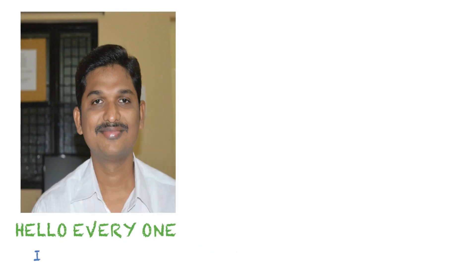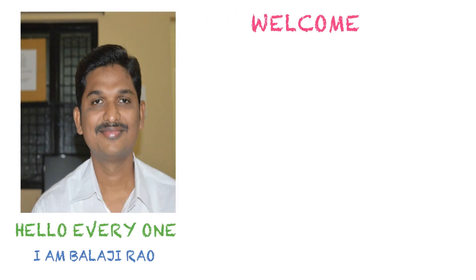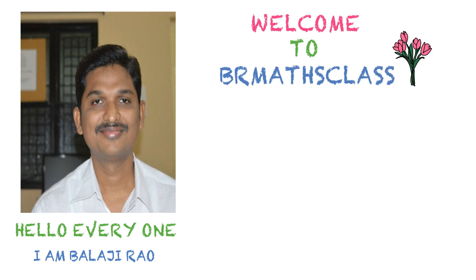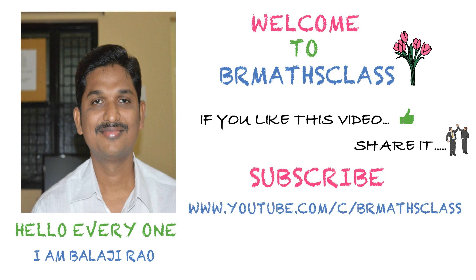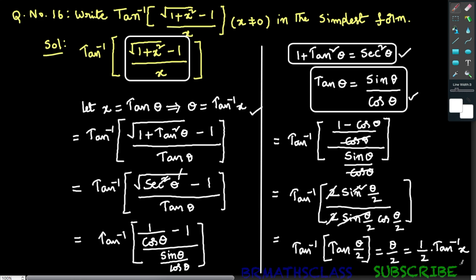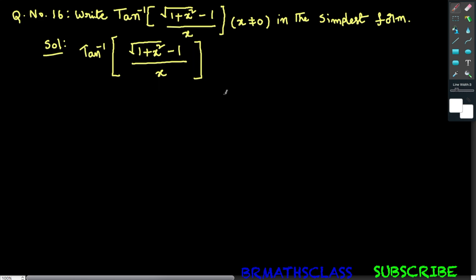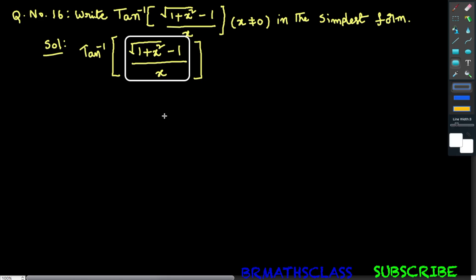Hello everyone, I am Balaji Rao, welcome to BR Max Class. If you like this video, share it with your friends and subscribe to my YouTube channel to get more updates. Write tan inverse of square root of 1 plus x squared minus 1, divided by x, in the simplest form. To write this expression into simplest form, observe the expression: square root of 1 plus x squared minus 1, divided by x.